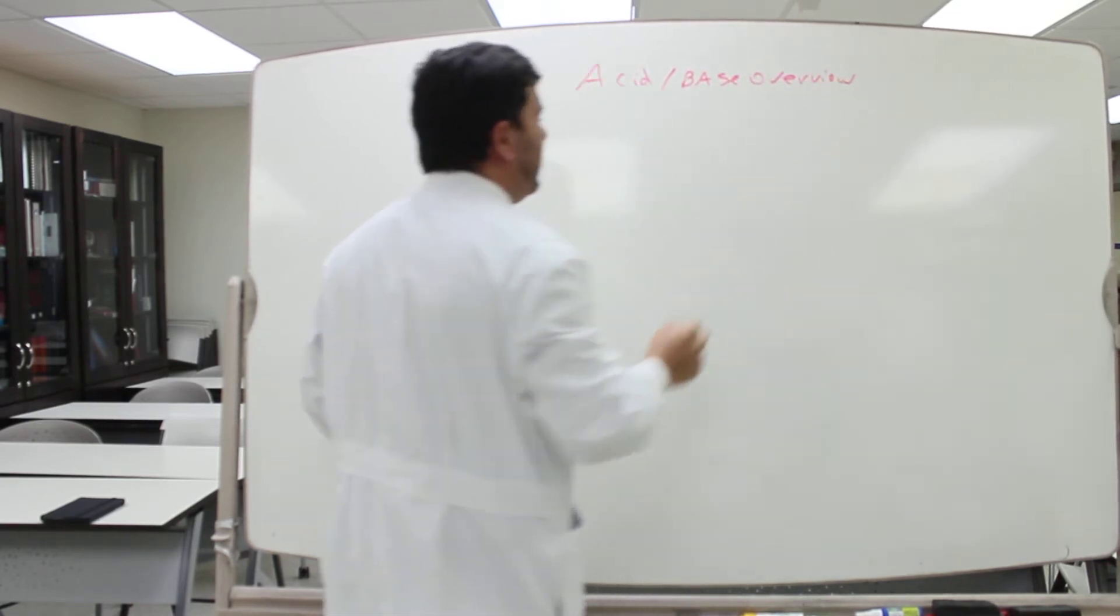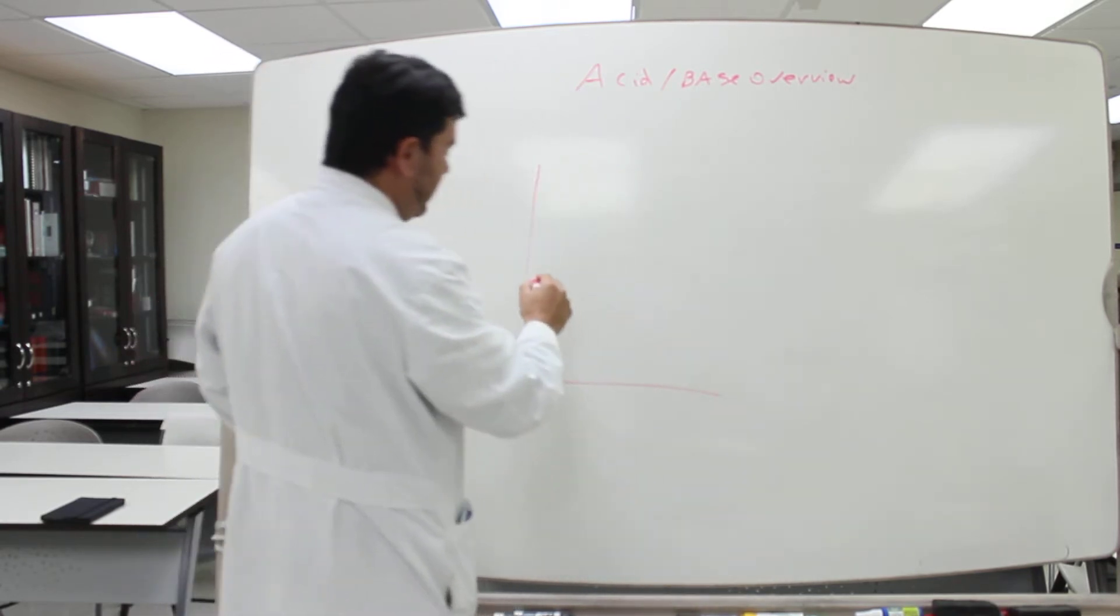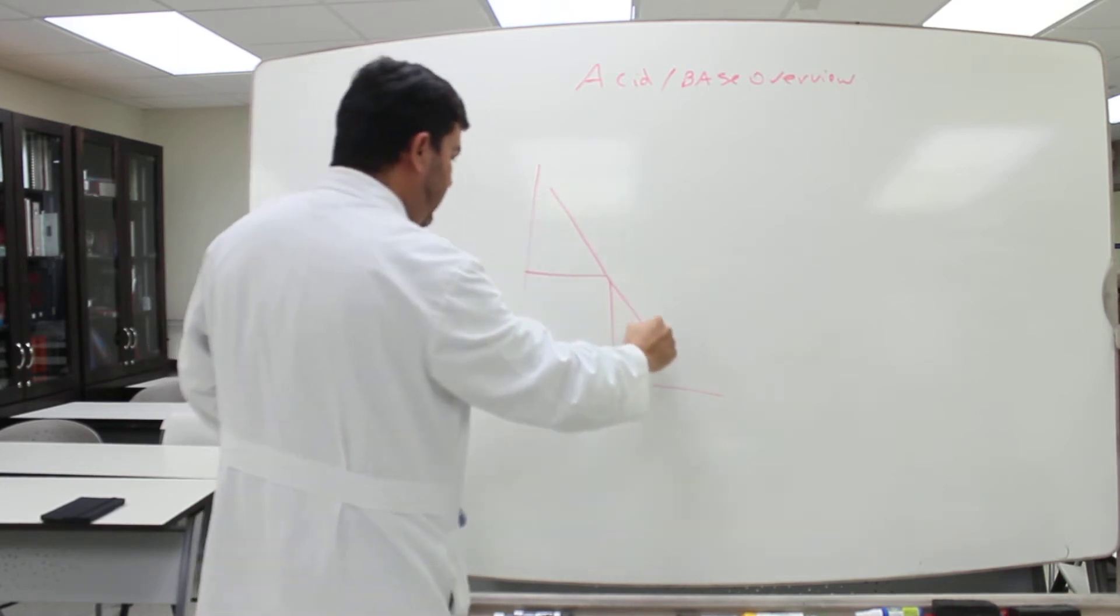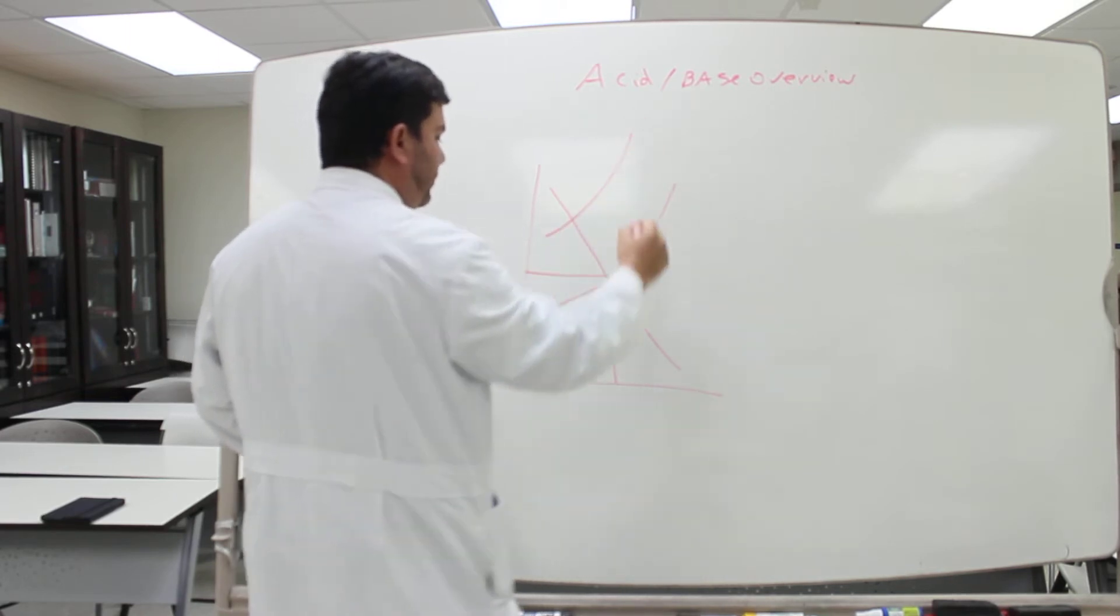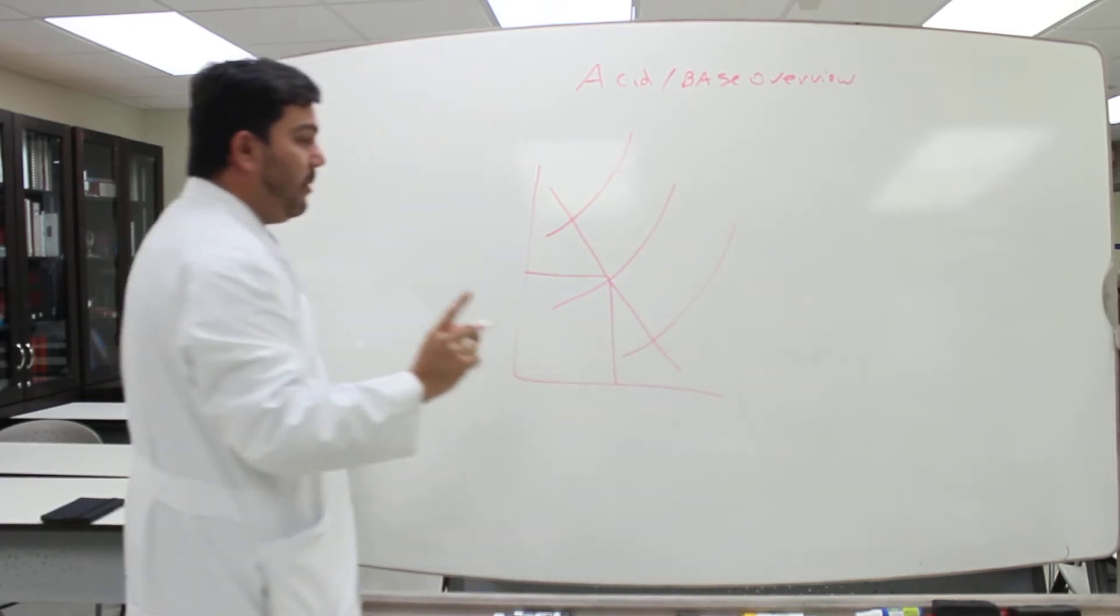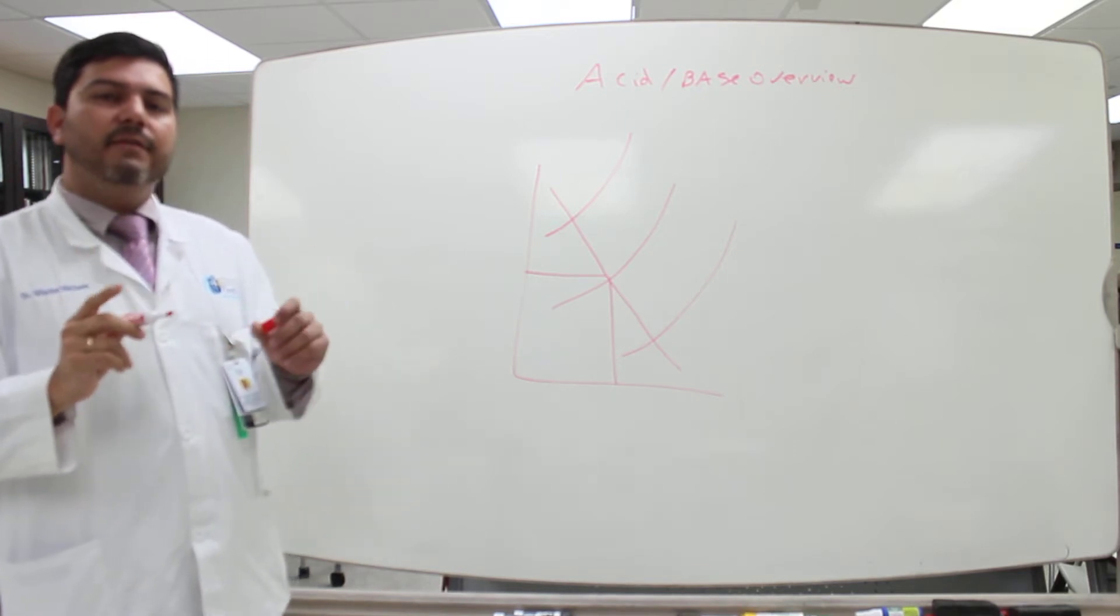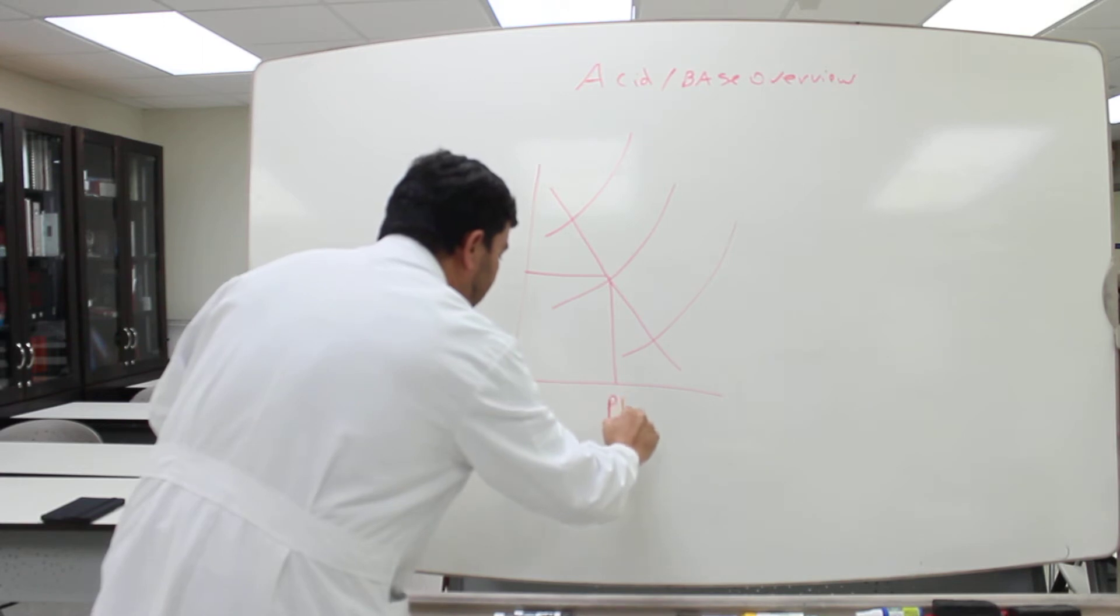One of the important things when you see an ABG is to recognize what is going on with the patient. One of the things that I like to do is this figure. So remember, the first thing you're going to see in an ABG is the pH. pH is very important. And the normal value is 7.4.